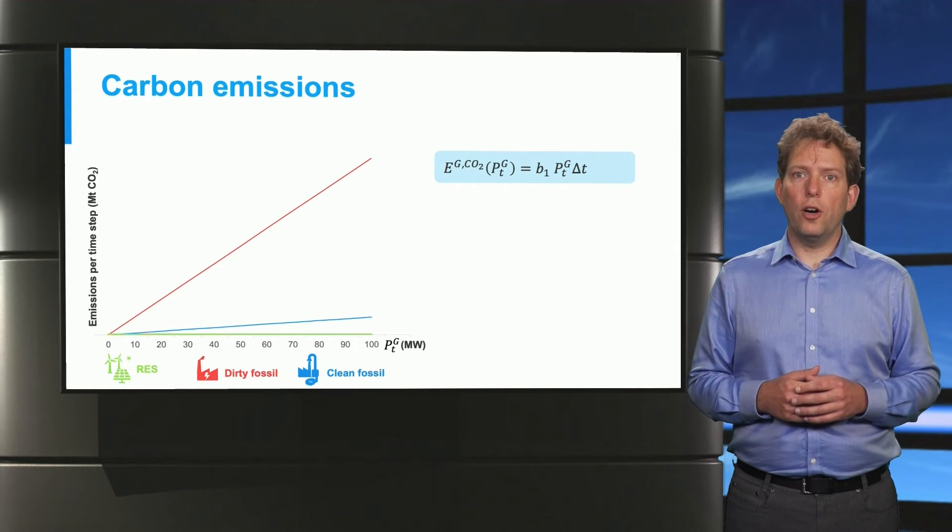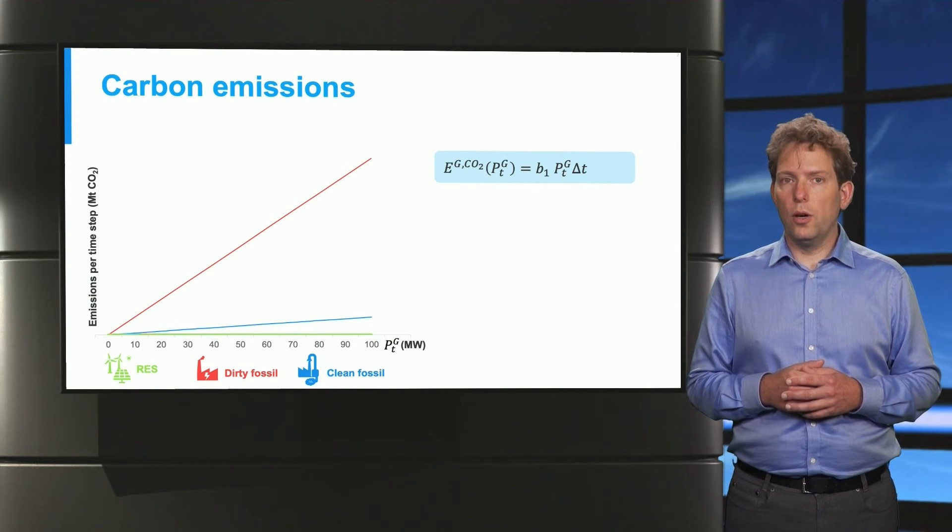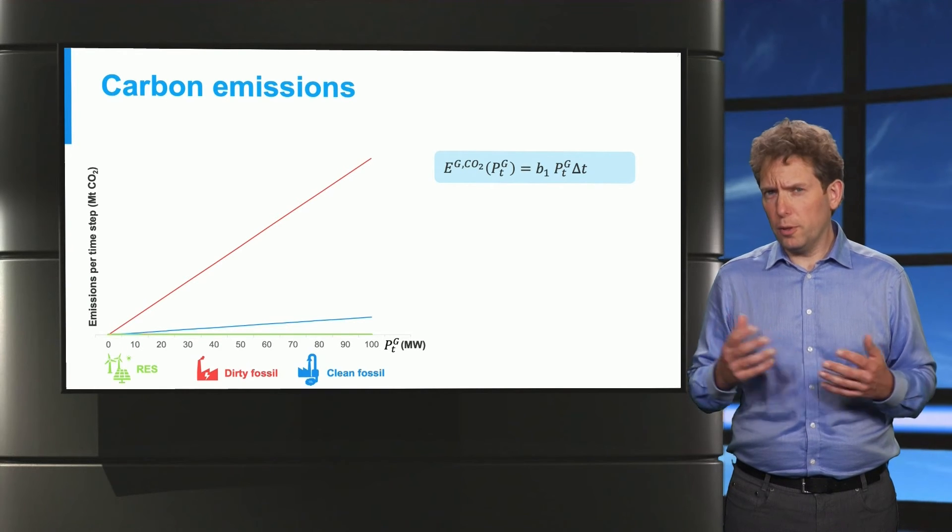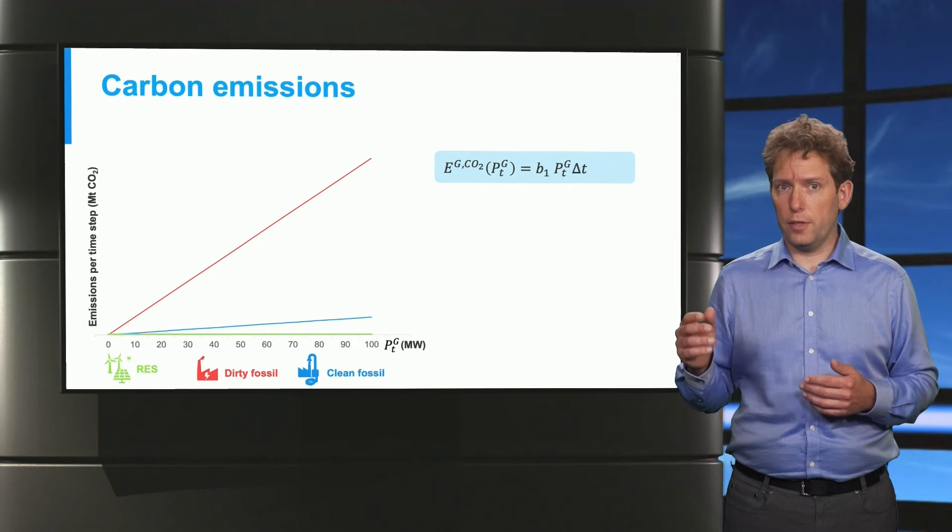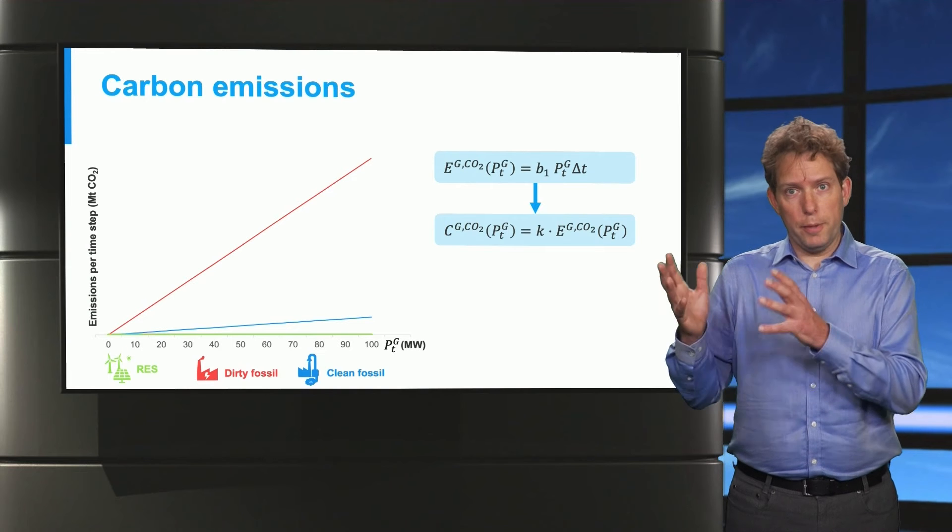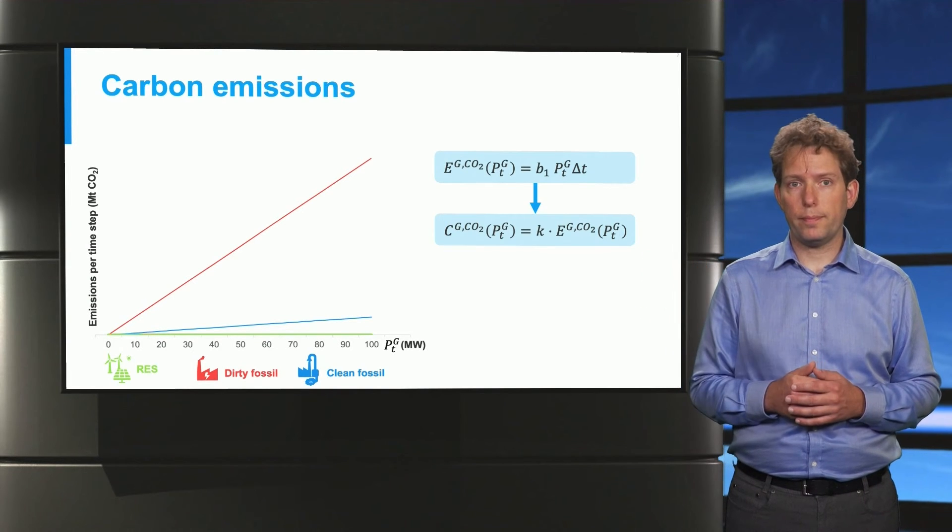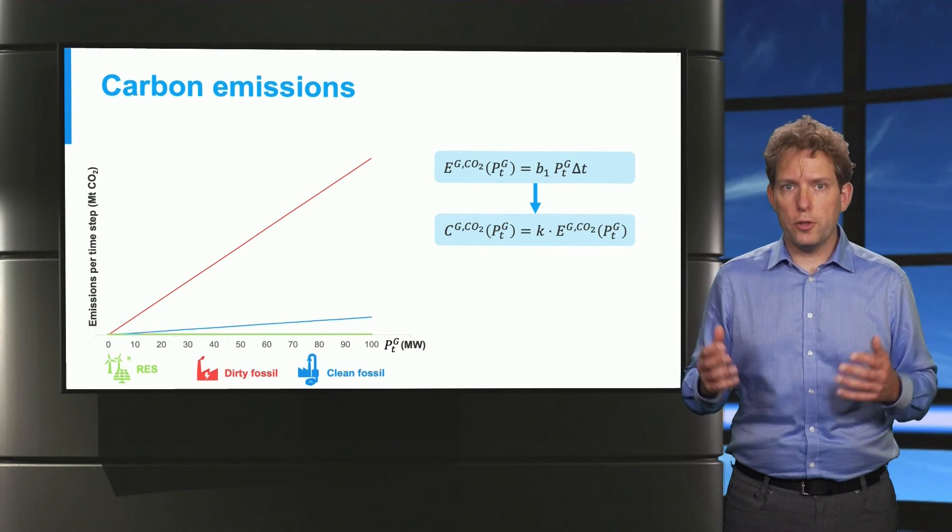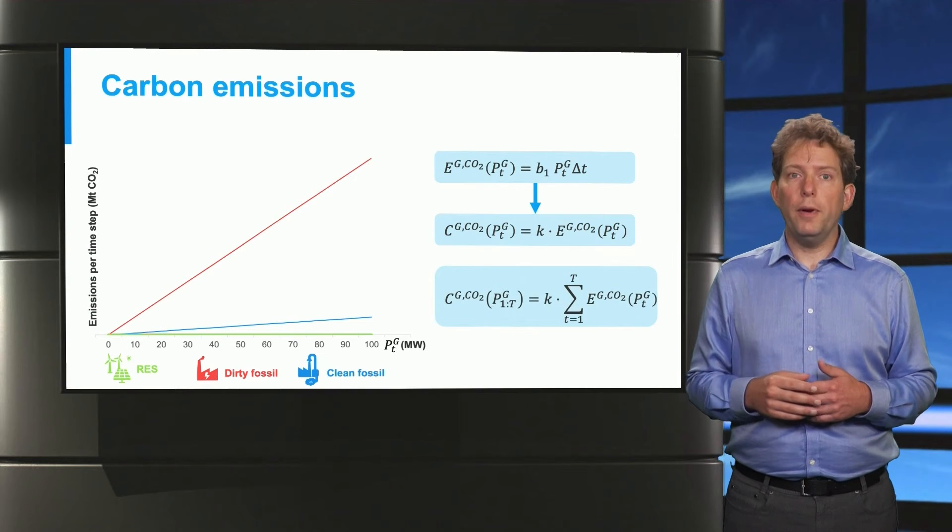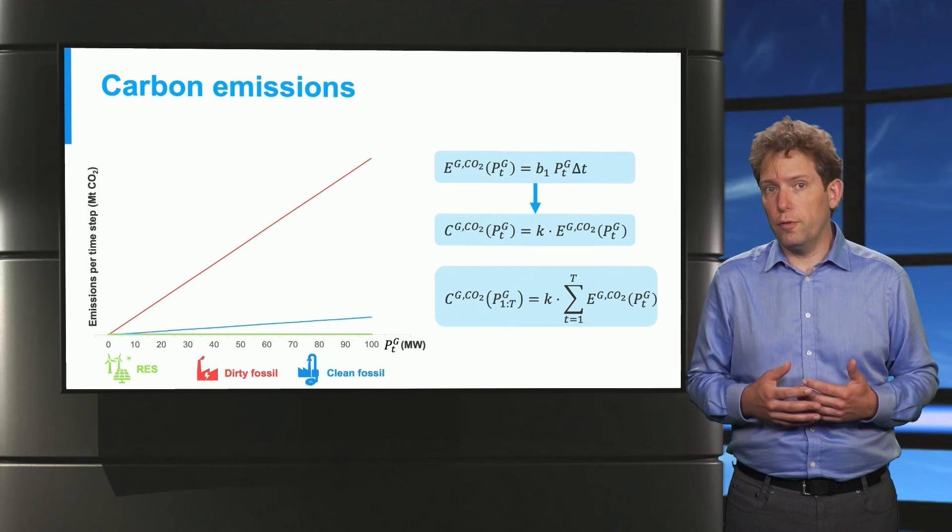And then we turn to the question of how we should include these emissions in our decision models. One way would be to place a constraint on the total amount of emissions. Another approach is to use an effective carbon price. So if we assume a constant price per tonne of CO2, we can simply multiply our emissions by this price, and have a formula for the cost of emissions. And again, as for the variable cost of generation, if we consider a dispatch problem over multiple time steps, we add up these costs for each time step, so that we can calculate the total emission costs for a generator.